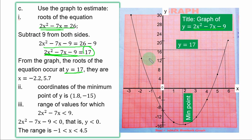Go to the y-axis and locate 17. Trace it to meet the curve at both ends. Here is the first point — trace to the s-axis. Here is the second point — also trace to the s-axis. On the s-axis, one line is 0.1, and the solutions become s = -2.2 or s = 5.7.